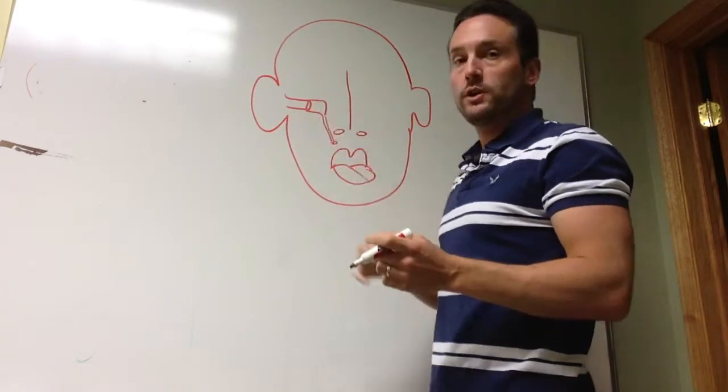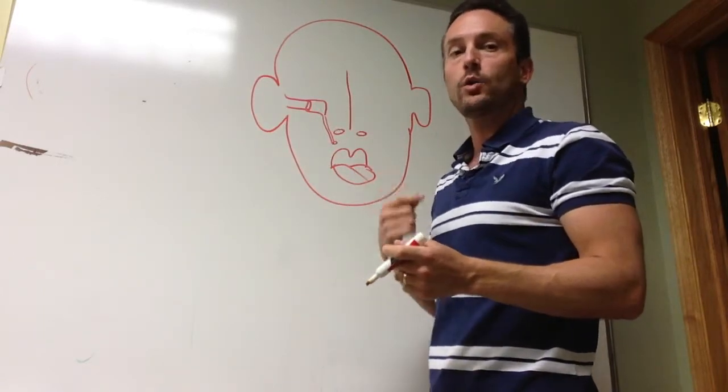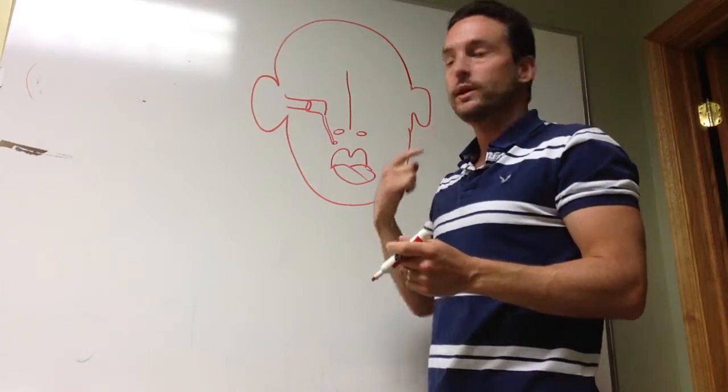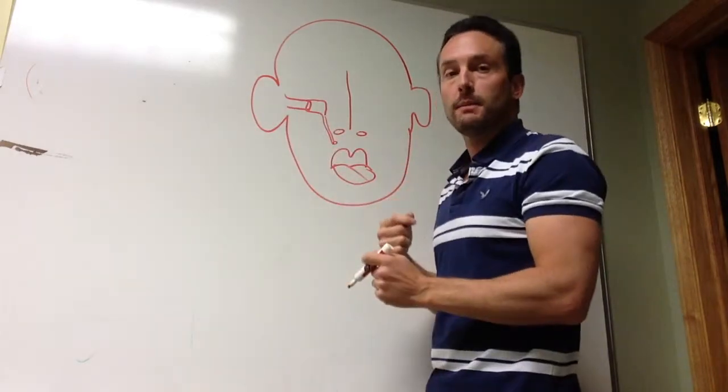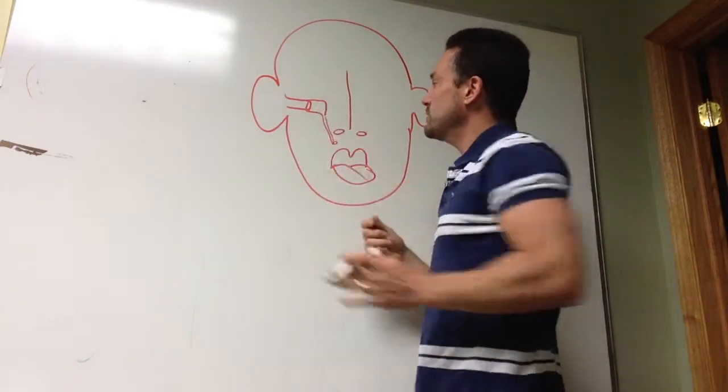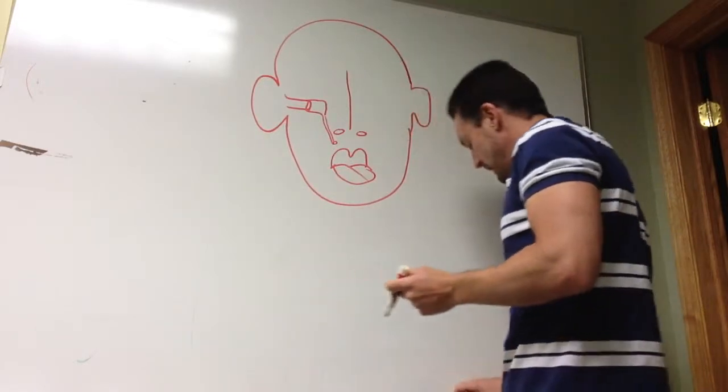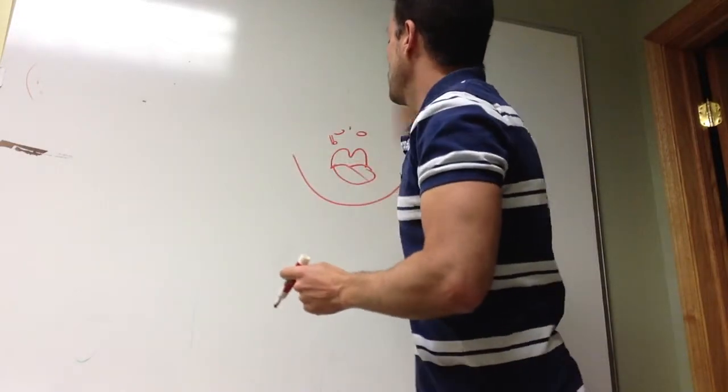When you get pressure in your ear on an airplane and you swallow or chew gum or yawn to get your ears to pop, you're moving the muscles in the back of the throat, and that eustachian tube opens for a moment and the pressure rushes in or rushes out.